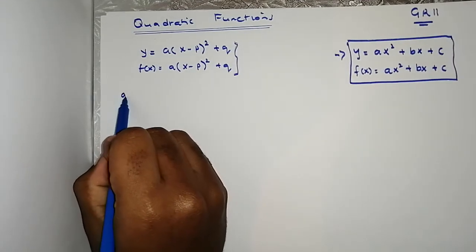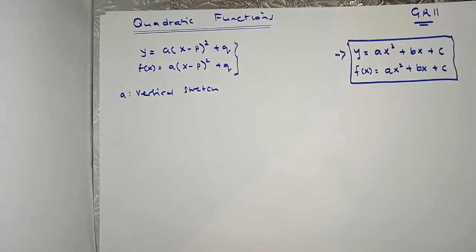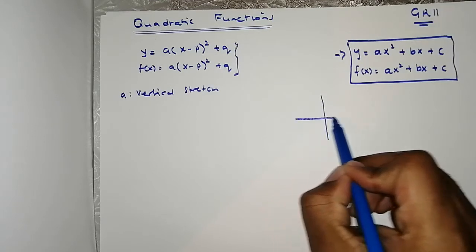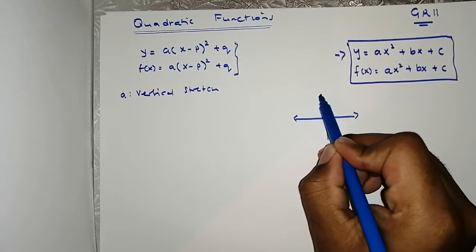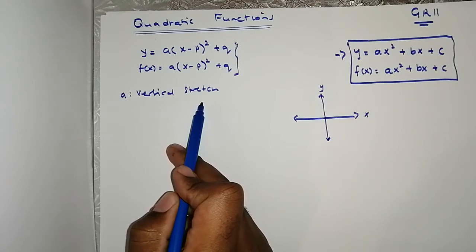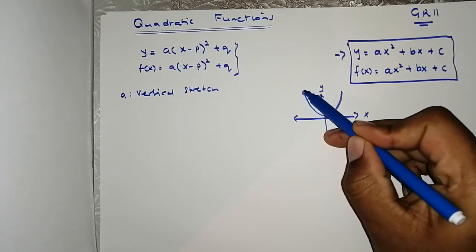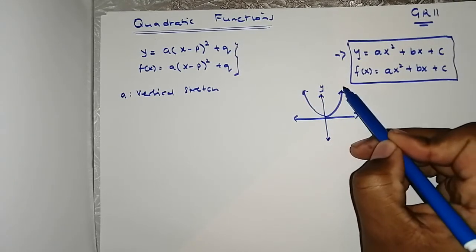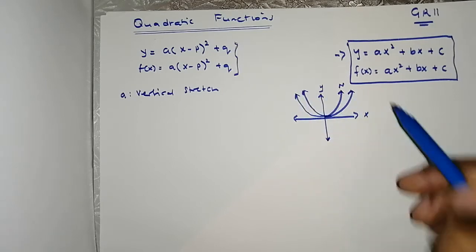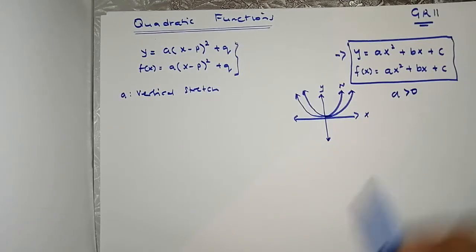First and foremost, let us introduce some terms. 'a' is the vertical stretch of the graph — we established this when looking at functions in grade 10. It determines whether the graph is going to be narrow or wide. If a is greater than zero, the graph will face upwards.